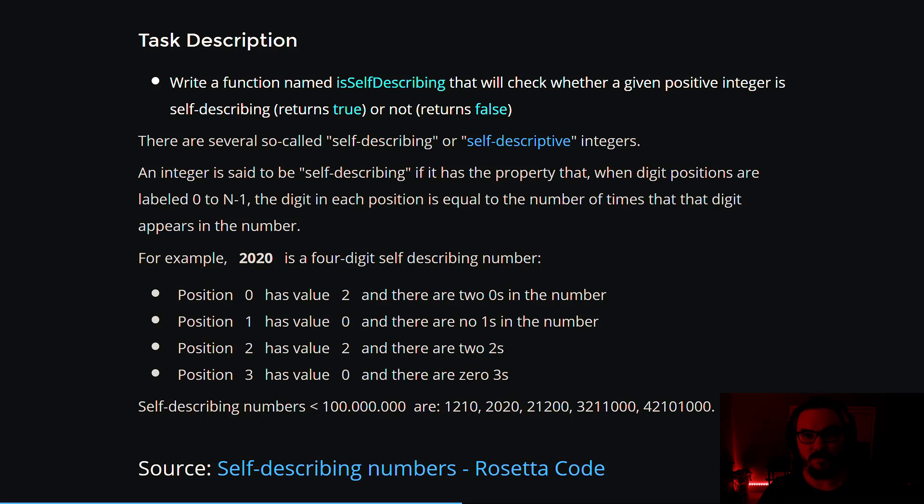So what is self-describing? What does that mean? There are several so-called self-describing or self-descriptive integers. That second one is blue because it's a link to a Wikipedia page that describes what self-descriptive means. I will link that in the description as well. It's also in the slides.